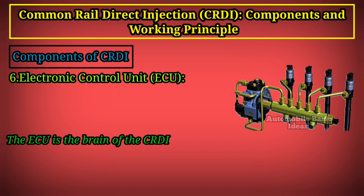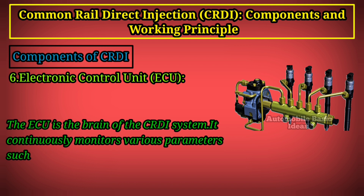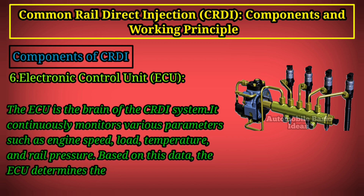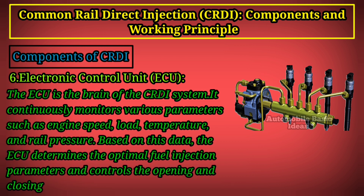Component 6 — Electronic Control Unit (ECU): the ECU is the brain of the CRDI system. It continuously monitors various parameters such as engine speed, load, temperature, and rail pressure. Based on this data, the ECU determines the optimal fuel injection parameters and controls the opening and closing of the injectors.